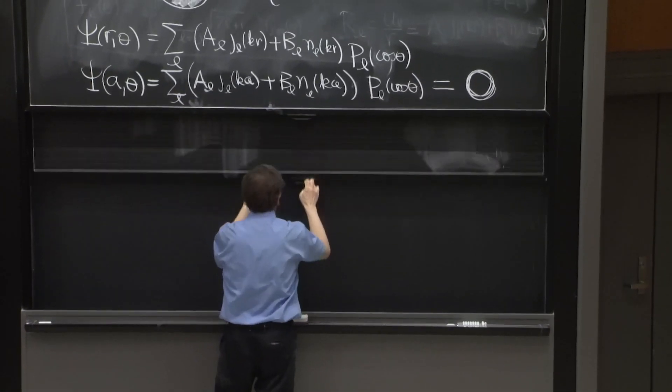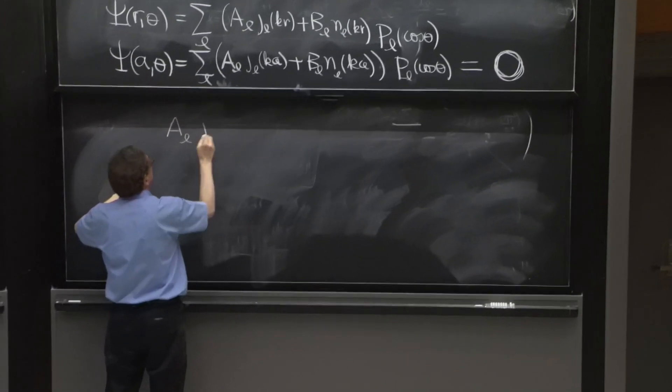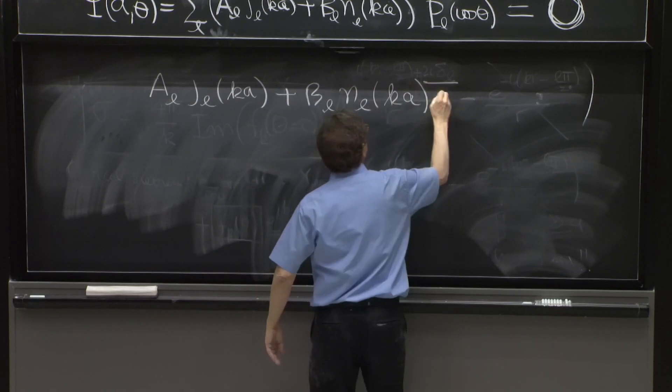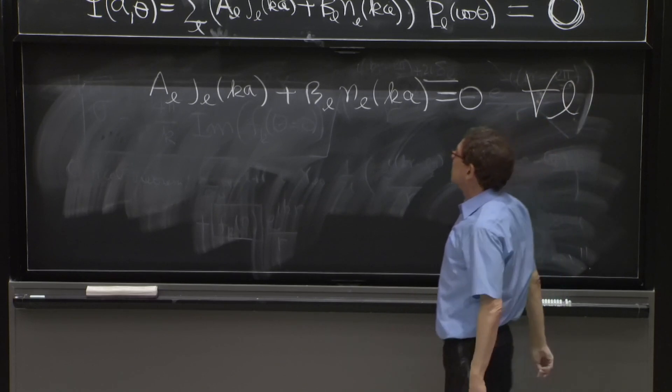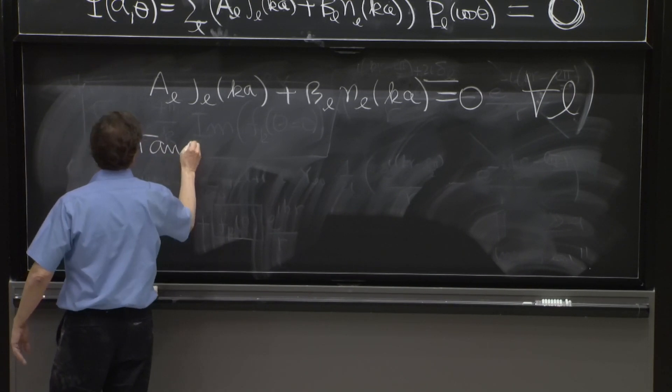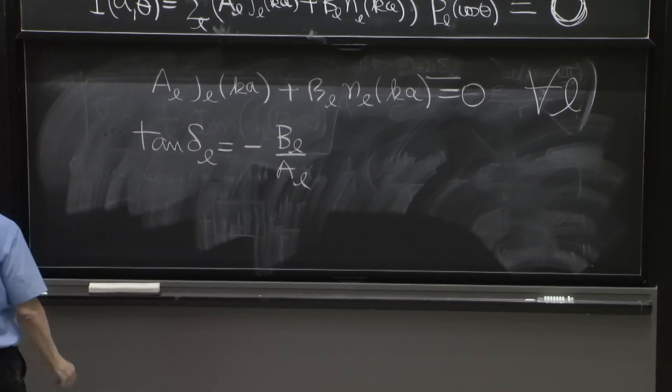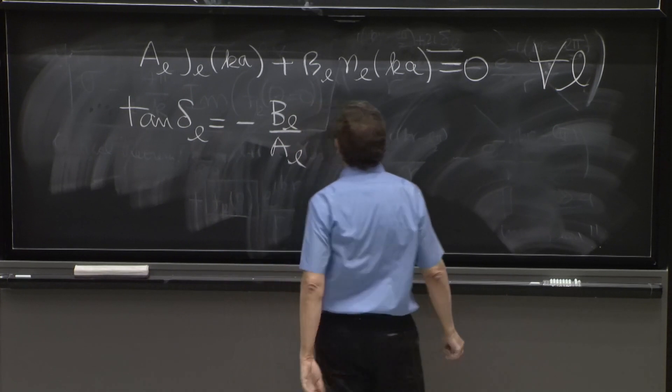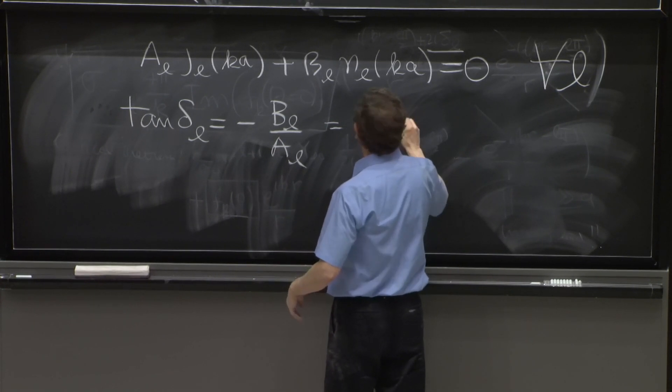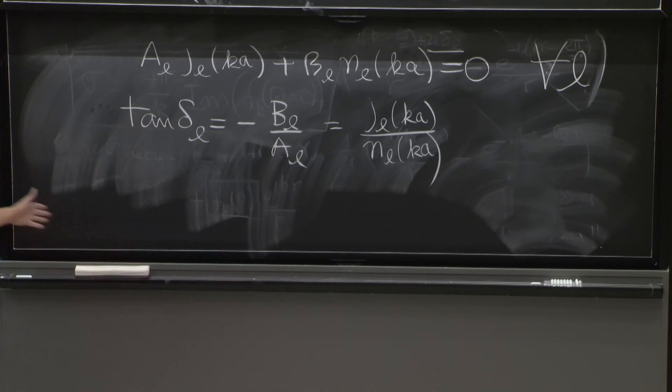Therefore, here, we have that aL jL of k a plus bL nL of k a must be 0 for all l. And therefore, tangent delta l, which is minus bL over aL, has been determined. The tangent delta l is bL over aL, and that's equal to jL of k a over nL of k a. Done.